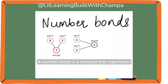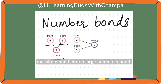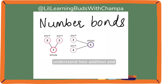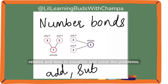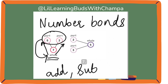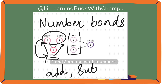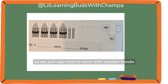A number bond is a concept that represents how numbers can be broken down and combined. Basically, it's a visual representation of how small numbers — also called the parts — are combined to make the whole number. These number bonds can help kids understand how addition and subtraction are related and how to visualize and solve problems. So, 7 is a bigger number; it can be broken down to 5 and 2. 5 and 2 together makes 7. Similarly, 2 and 3 are the part numbers; they combine together to make the big number 5. Number bonds help you to add and subtract, visualize, and solve the problem.